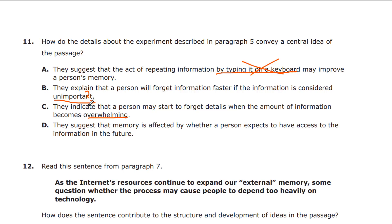Answer D suggests that memory is affected by whether a person expects to have access to information in the future. Yes — whether it's saved, whether they have access to it or not. That's what the effect was. If they thought they were going to lose it, they spent time and 40% more could memorize it. Those who thought they always had access didn't spend the time to memorize it. D is the correct answer for the experiment in paragraph 5.